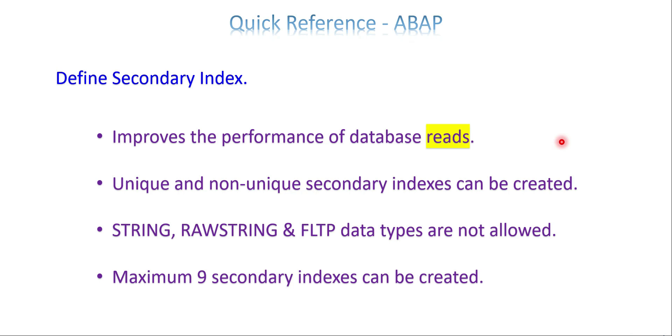Always remember, it increases the performance of reads only. Unique and non-unique secondary indexes can be created, but primary is always unique. The STRING, RAWSTRING, and FLTP data types are not allowed while creating your secondary index. Maximum nine secondary indexes can be created. Each index can have some fields on it.